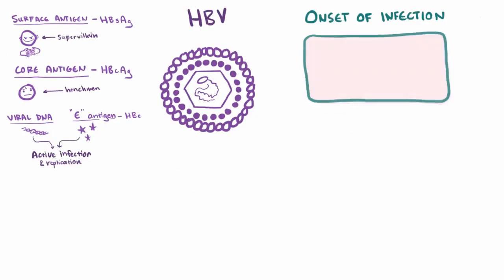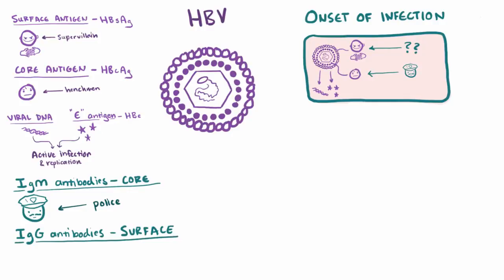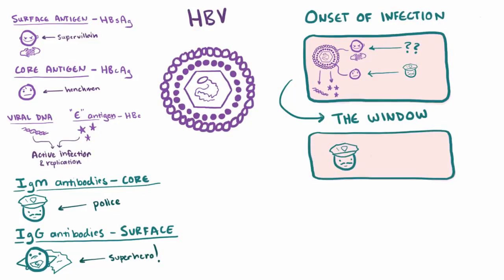At the onset of infection during the acute phase, the surface antigen will be present, and its factory will be pumping out both viral DNA and E antigen. The immune system produces IgM antibodies against the core antigens — like a basic police force working against the core henchmen. To actually defeat the virus, you need to go for the surface antigen — the supervillain — and the IgG antibody for the surface antigen is our superhero. The host then enters the window period, where neither the surface antigen nor the surface IgG antibody can be detected, since both are very low, and this can last from several weeks to months. The only thing detectable during this stage is the IgM core antibodies.